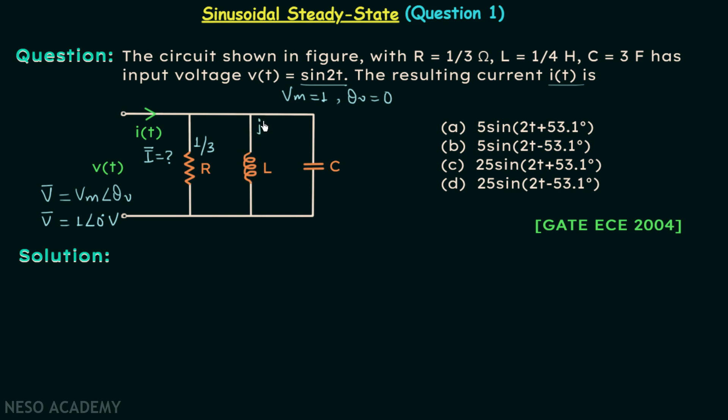In place of L we will have jXL. In place of C we will have negative jXC.